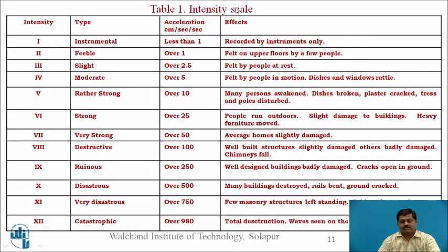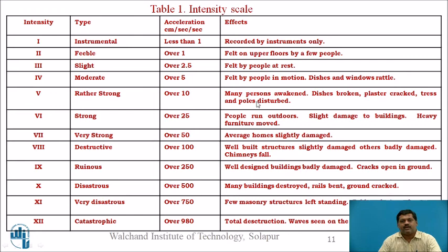You can see the intensity scales here — there are 1 to 12 divisions, their types are explained, and corresponding acceleration levels and effects are listed. For example, intensity 5 is classified as 'Rather Strong,' with an acceleration of 100 mm/s² (10 cm/s²), where many persons are awakened, dishes are broken, plaster is cracked, and trees and poles are disrupted.